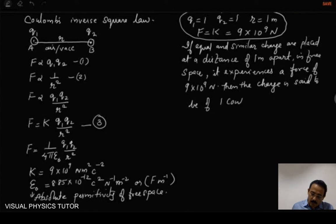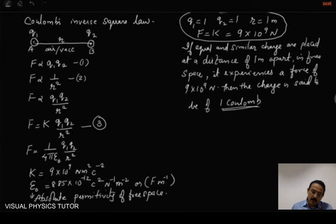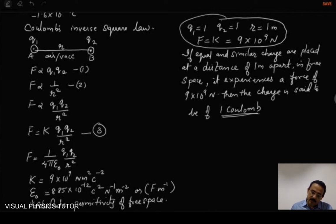So here is the definition for one coulomb: when the charges are one coulomb each and they are separated by a distance of one meter in free space, the force experienced by them will be equal to 9 into 10 to the power 9 Newton.